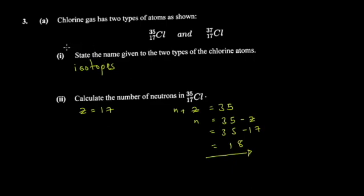What you had to do here was, you're told that chlorine gas has two types of atoms as shown. You have this atom here and then this atom here. You're asked to state the name given to the two types of chlorine atoms.